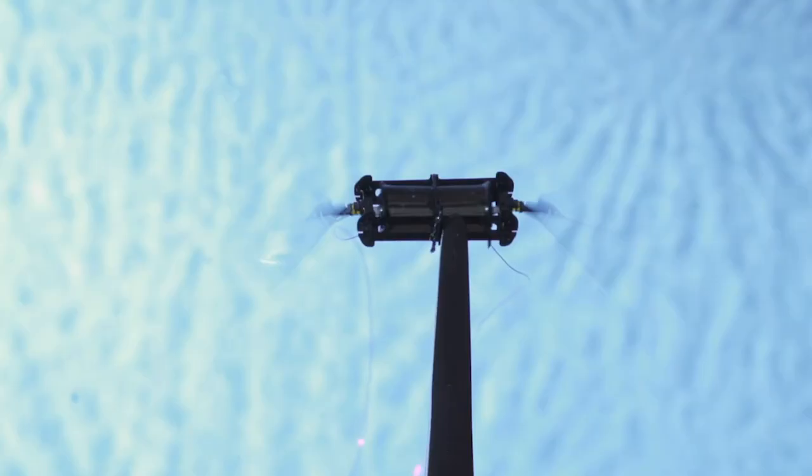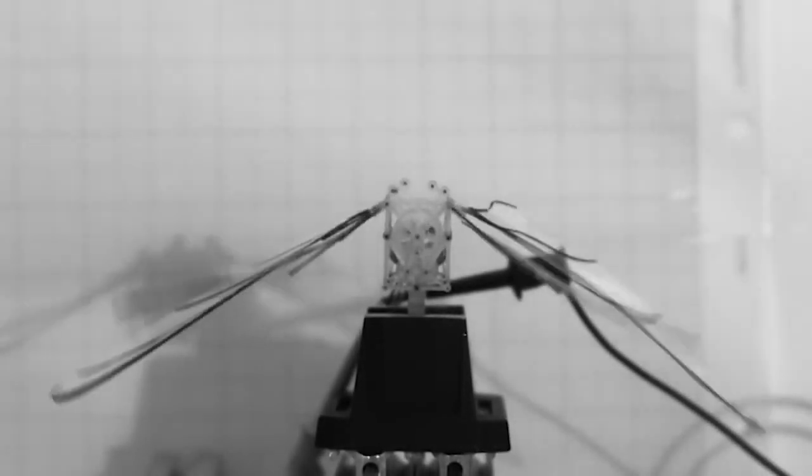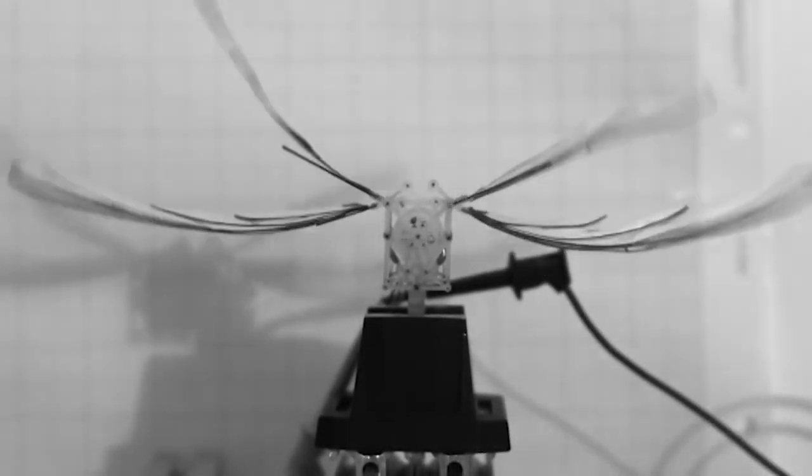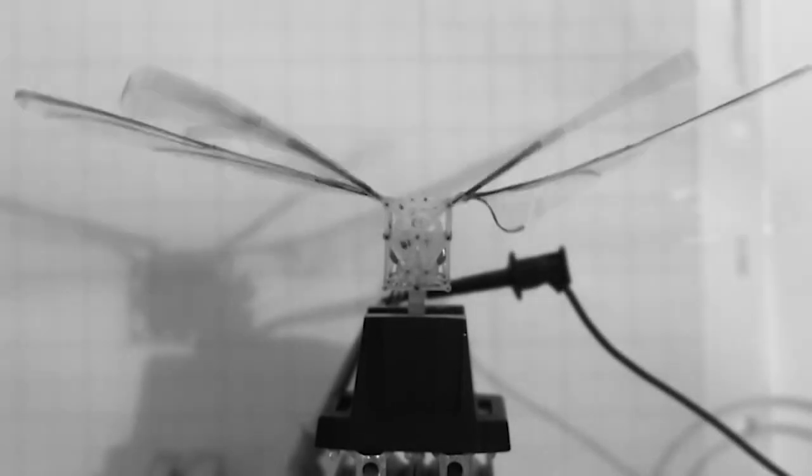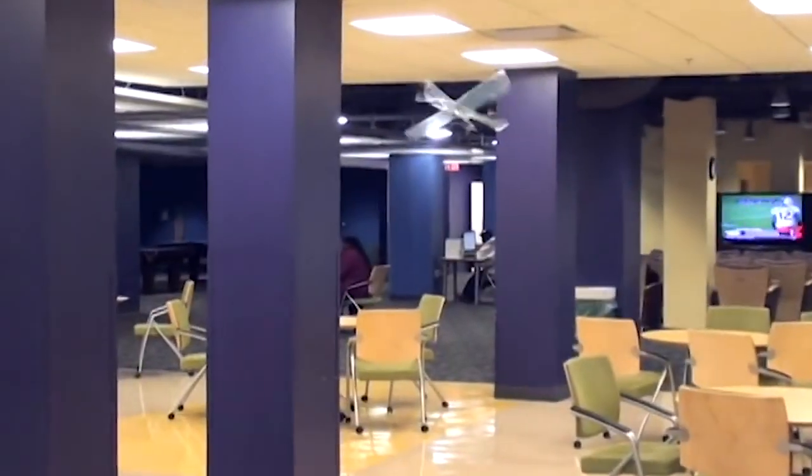The ability to emit light also brings these microscale robots, which weigh barely more than a paperclip, one step closer to flying on their own outside the lab. These robots are so lightweight that they can't carry sensors, so researchers must track them using bulky infrared cameras that don't work well outdoors. Now, they've shown that they can track the robots precisely using the light they emit and just three smartphone cameras.